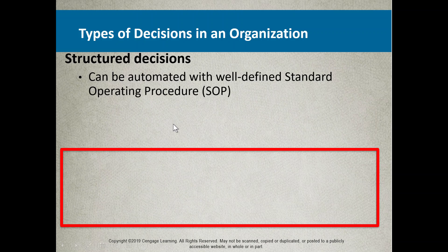Structured decisions are seen within almost all major organizations in the form of a Standard Operating Procedure. When decisions need to be made on a repetitive basis — daily, weekly, monthly, yearly — companies tend to write out a procedure or policy that guides employees on how to make decisions based on constant events. These are sometimes referred to as automated decision structures, because there is a structure involved.